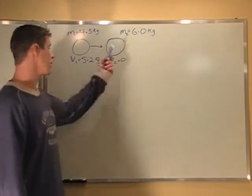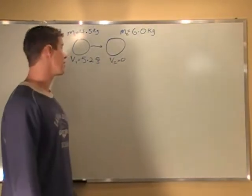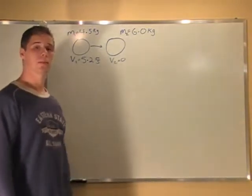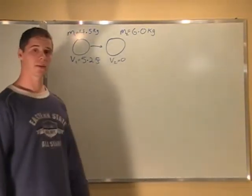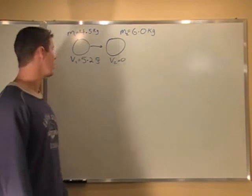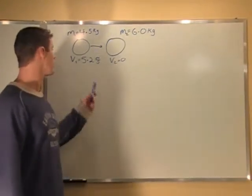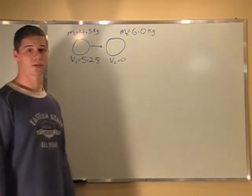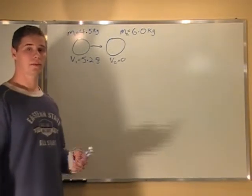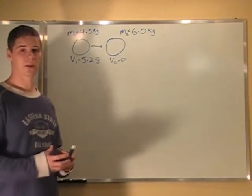With this problem, we have a bowling ball that's stuck in a gutter. It has a mass of 6 kilograms, and we bowl another bowling ball with a mass of 4.5 kilograms down the gutter towards it to knock it out of the way. This bowling ball has a mass of 4.5 kilograms and a velocity of 5.2 meters per second when it hits it. We want to find the velocities of the balls after these two balls collide.